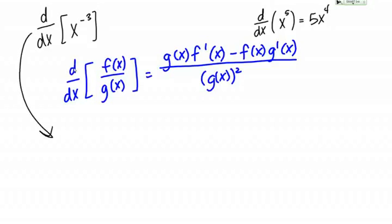If we do that, it's going to look like this: 1 over x cubed. The derivative with respect to x of 1 over x cubed is what we want to find.